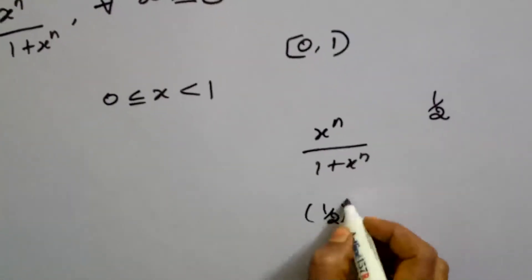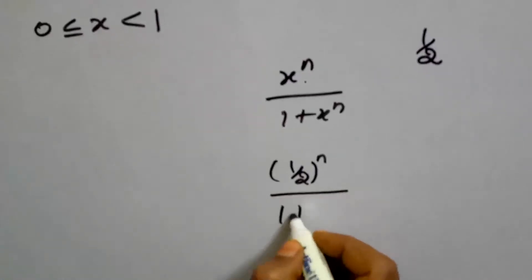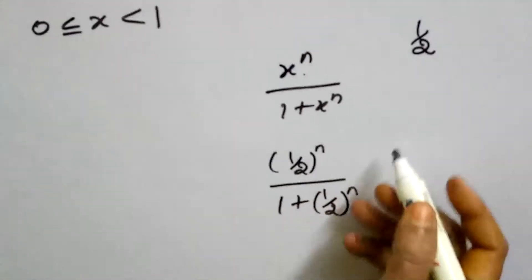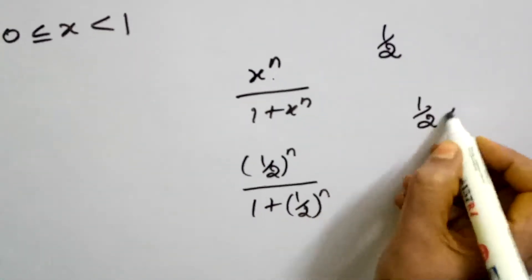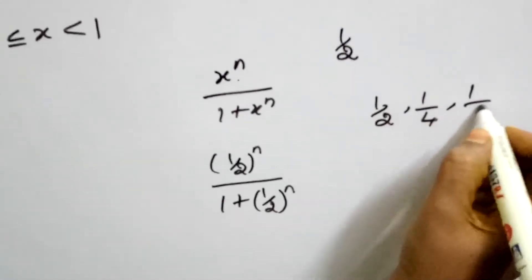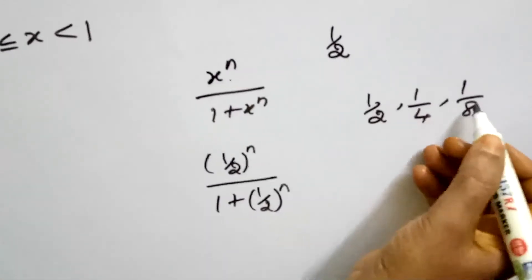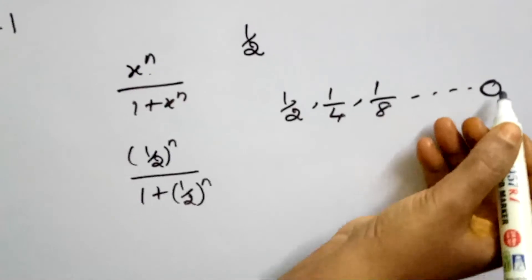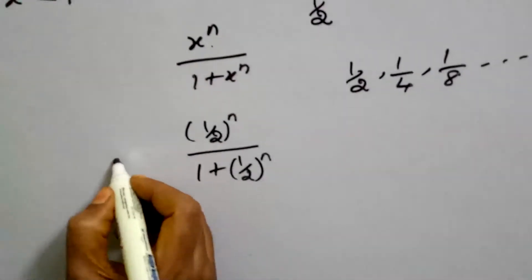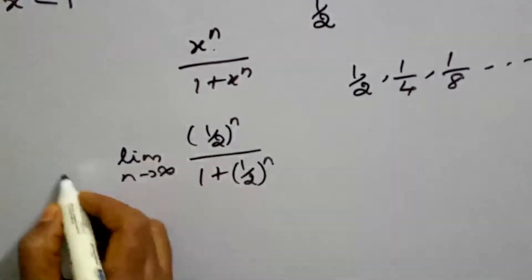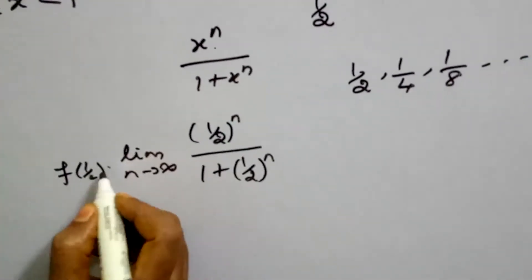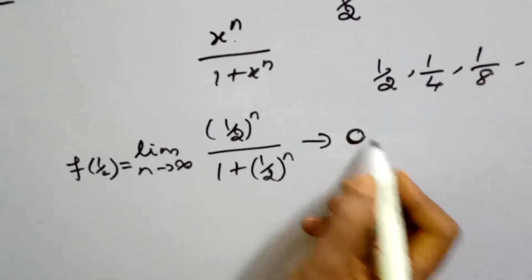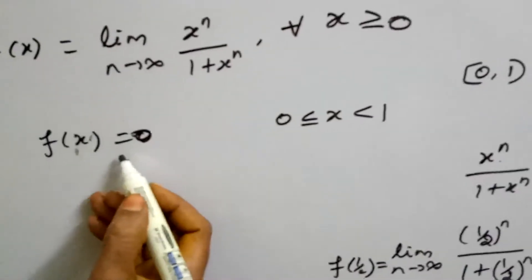For example, (1/2)ⁿ → 0 as n → ∞. So limit n→∞ of (1/2)ⁿ = 0. If we choose any x value in the interval [0,1), the value of f(x) is 0.